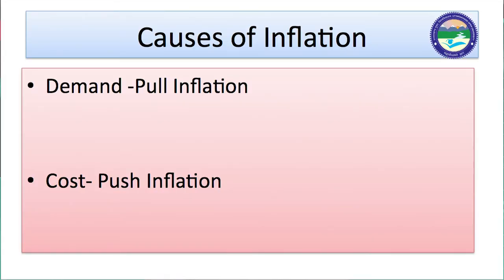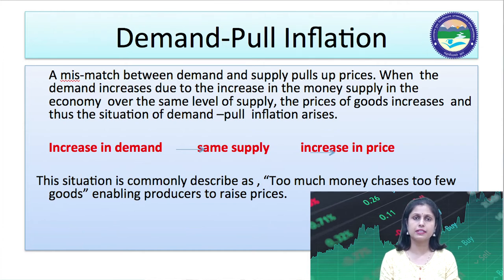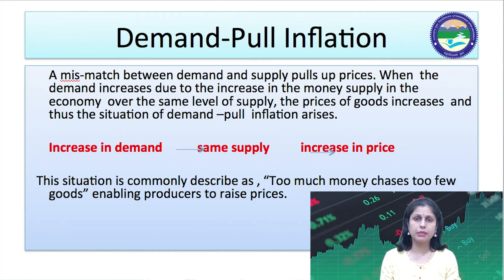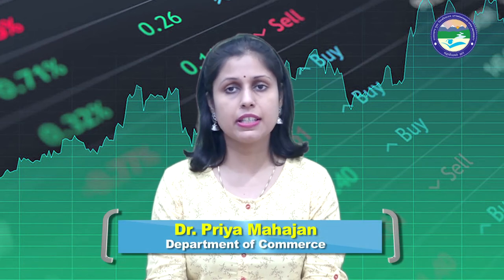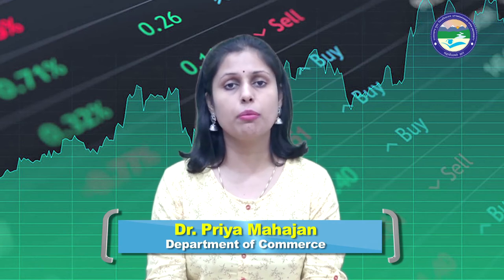Next are the causes of inflation. There are two types that lead to increases in prices of goods and services: demand-pull inflation and cost-push inflation. Demand-pull inflation occurs when a mismatch between demand and supply pulls up prices. When money supply increases in the economy over the same supply of goods and services, prices rise. When demand increases and supply remains the same, there is an increase in prices — there is a positive relationship between demand and prices. This situation is commonly described as 'too much money chasing too few goods,' making producers raise prices.